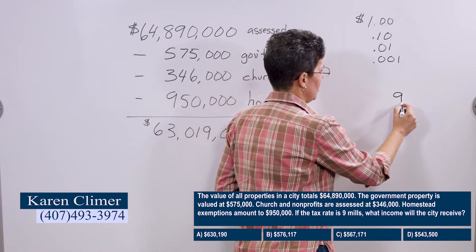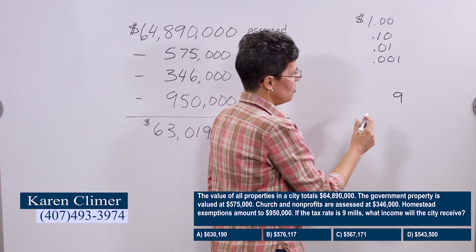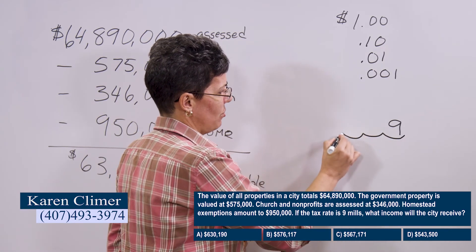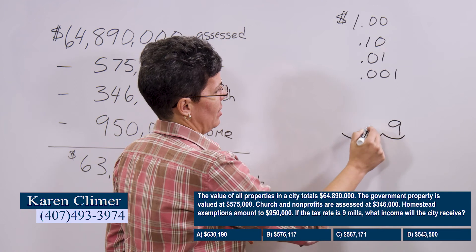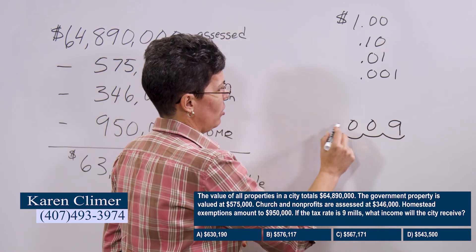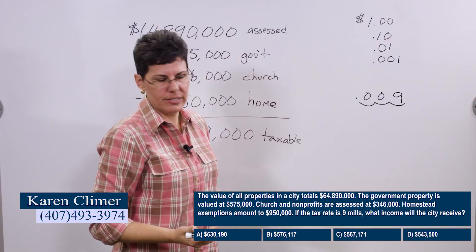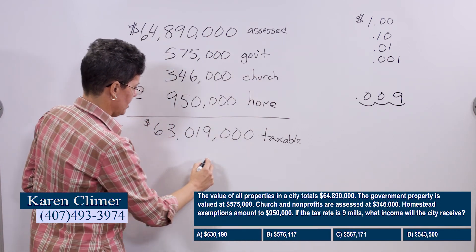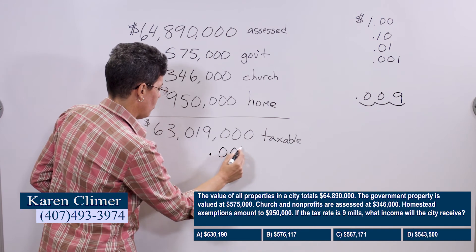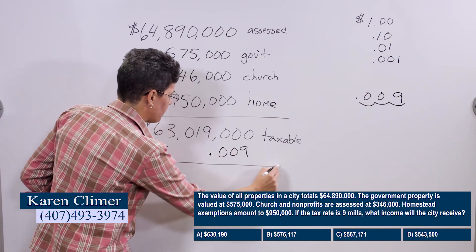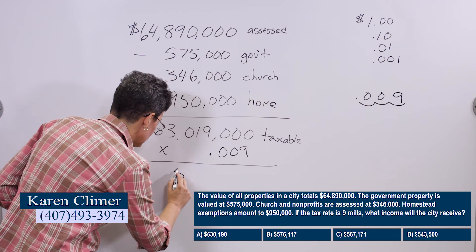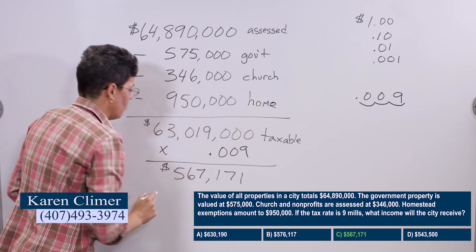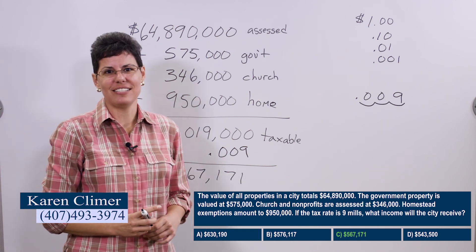So if we have nine mills, you move the decimal over three spaces to the left — one, two, three. So we have 0.009 as the number we're going to use. We take sixty-three million, nineteen thousand times 0.009 — or nine mills — and that gives us five hundred and sixty-seven thousand, one hundred and seventy-one dollars, which in our case is answer C.